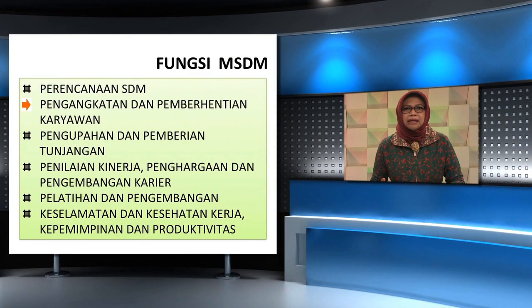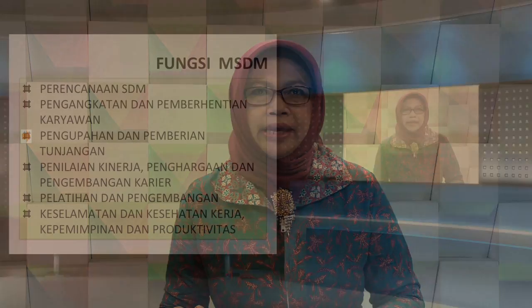Dua, pengangkatan dan pemberhentian karyawan. Aktivitas utama pengangkatan dan pemberhentian karyawan adalah: A. Merekrut sumber daya manusia organisasi yang diperlukan untuk mencapai tujuan organisasi. B. Menyeleksi dan mengangkat sumber daya manusia untuk mengisi jabatan tertentu dalam organisasi, termasuk di dalamnya menyelenggarakan kegiatan orientasi kerja karyawan baru. C. Menyelenggarakan proses pemutusan hubungan kerja secara baik.